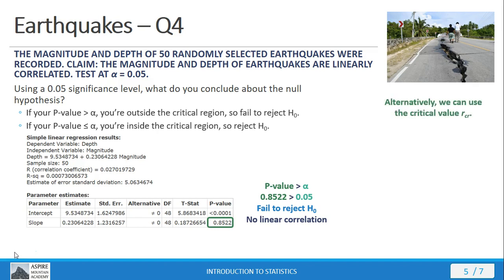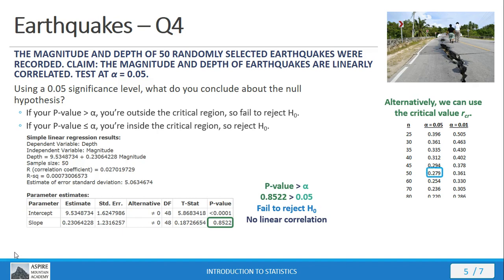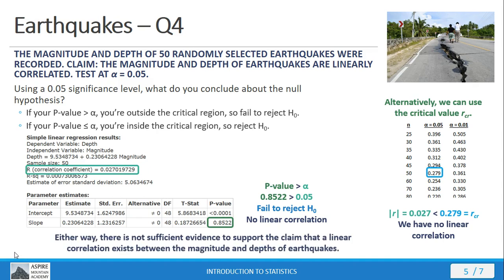Alternatively, we can use our critical r-value to get at the same conclusion. Here's our critical r-value table looking for a sample size of 50 and a significance level of 5% — that's going to give you .279 for the critical r-value. When I compare that with the r-value we get from our data, .027, you can see that we're nowhere near to clearing the bar with the data that we've got. So again, we have no linear correlation, and there is not sufficient evidence to support the claim of linear correlation.